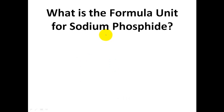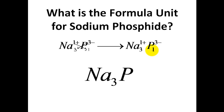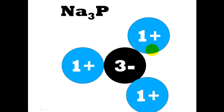Next question: what is the formula unit for sodium phosphide? Na has a 1-plus charge and phosphorus has a 3-minus charge. Take the 3 and cross it over to sodium, take the 1 and cross it over to phosphorus, giving Na₃P₁. Removing the charges and the 1, the formula unit is Na₃P. This means 3 one-plus sodium ions cancel with 1 three-minus phosphorus ion, giving an overall charge of 0.